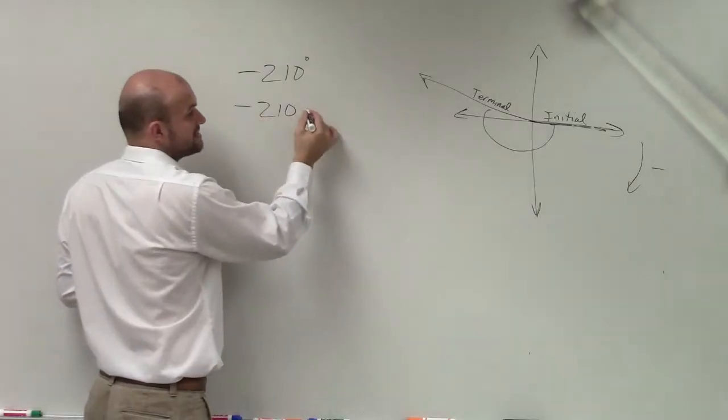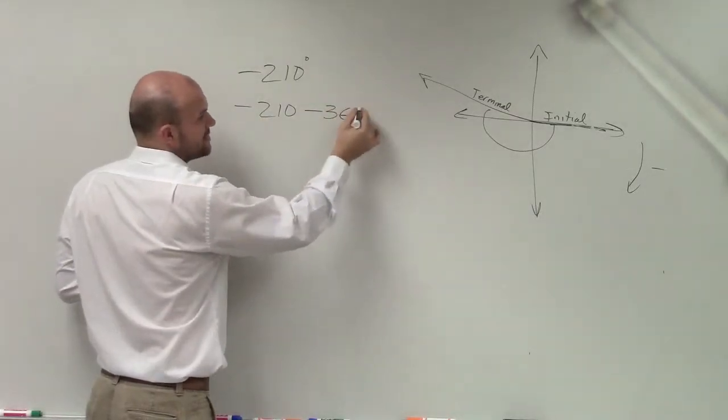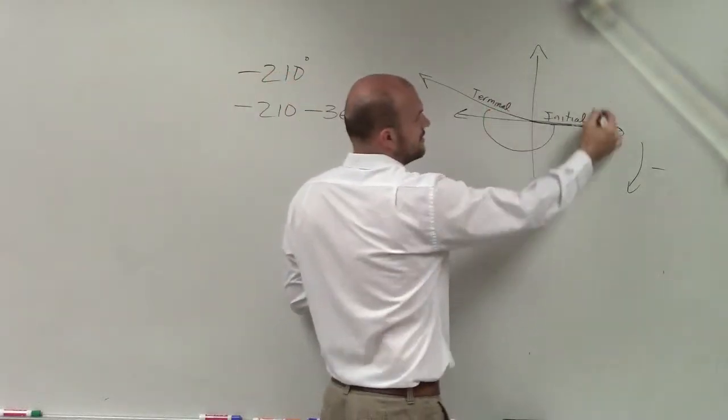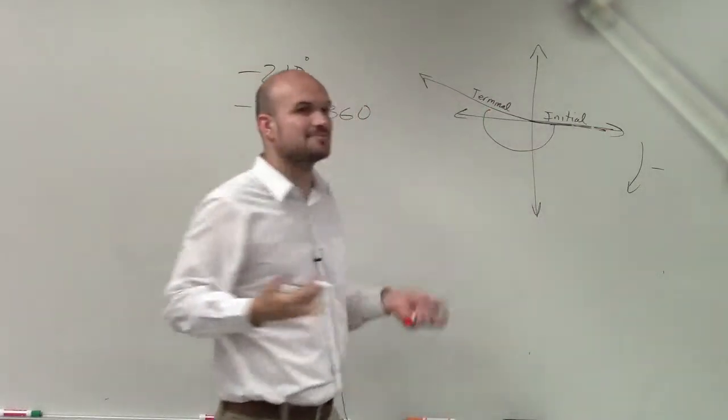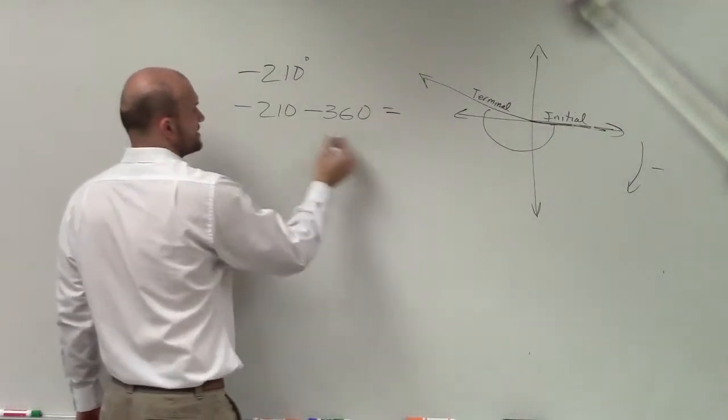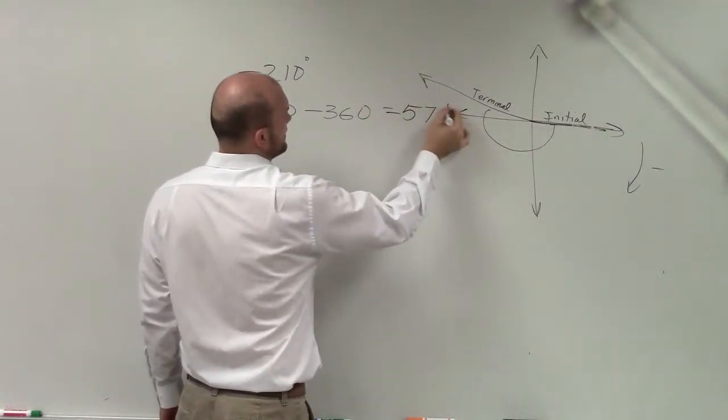And then I'm going to go again 360, but in the negative direction. You're going to continue going, but that's in the negative direction. That's why I'm subtracting 360. So therefore, that's going to give you 570, right?